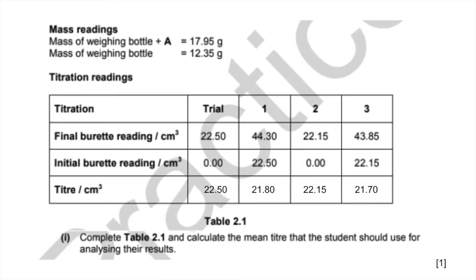That's what you would write in the titre row. For the mean titre, you never use the trial and you're looking for results that are concordant—they've got to be within 0.1 cm³ of each other. That rules out number two. We can only use one and three, and the mean of those is 21.75 cm³.